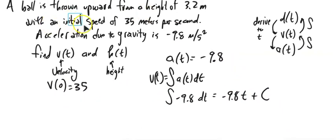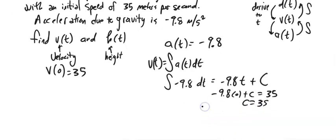So notice I could do that with anything. If it told me what the speed was a second into it, this would be v of 1 equals whatever that speed is, and I could substitute it in. But in this case, it's 0. So I know that negative 9.8 times 0 plus c equals that velocity of 35. So c is 35. So now I have an equation for that velocity.